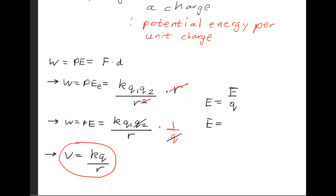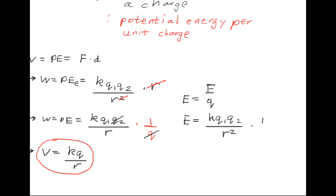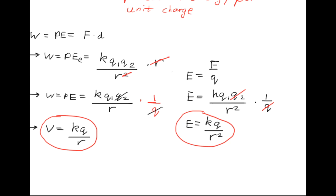So we get that the electric field is equal to k q1 times q2 over r squared. And let's not forget about this q term right here, so we multiply that by one over q. One of the q's is going to cancel out and we get this alternative formula for the electric field of k q over r squared.